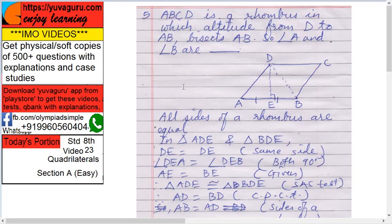Hi friends, welcome to IMO Videos, Standard 8th, Video Number 23, Quadrilaterals, Section A (Easy). Let's start. ABCD is a rhombus in which altitude from D to AB bisects AB, so angle A and angle B are... Here ABCD is a rhombus.